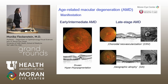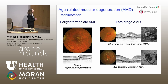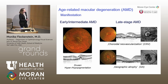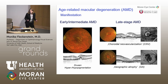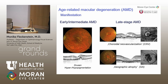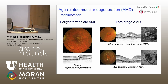Early and intermediate AMD are characterized by drusen and hyperpigmentation. On OCT we see dome-shaped elevations and hyperreflective foci correlating with hyperpigmentary changes. The late stages include choroidal neovascularization and geographic atrophy. Choroidal neovascularization is commonly understood as exudative, with exudation visible as intraretinal or subretinal fluid, and from time to time hemorrhages in the fundus — this is visible on angiography.